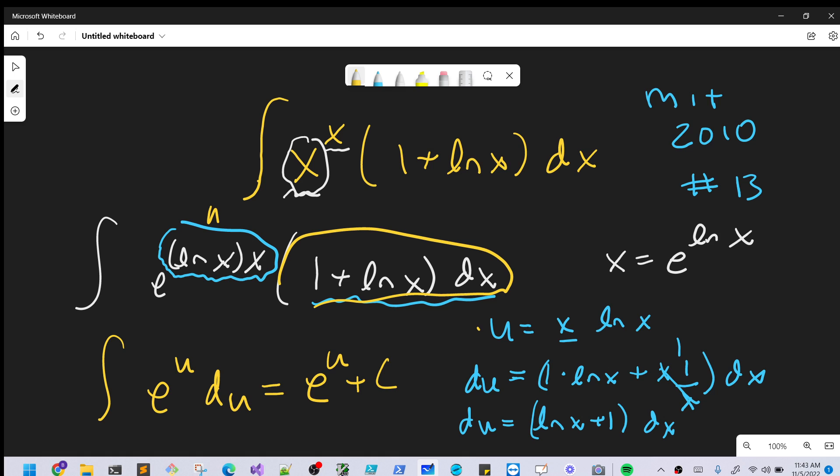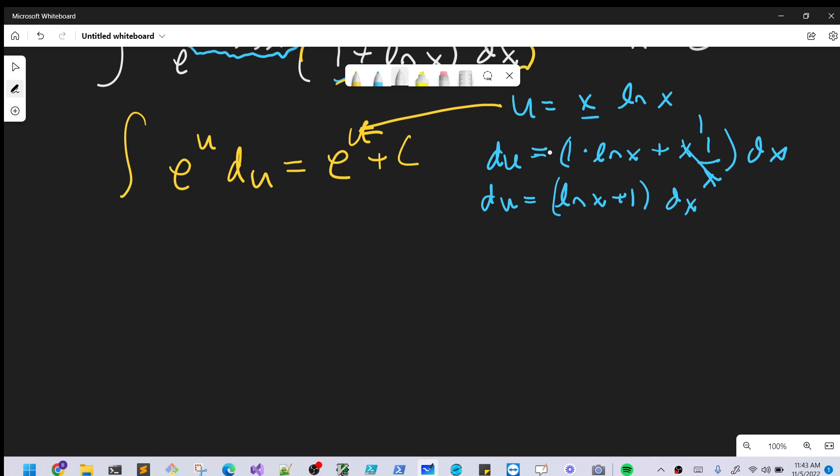Then all we need to do is back substitute, and when we do that we're going to have e to the x ln x plus C. But then, let's, we're correct here, but let's actually try to simplify this and get it back in the form where we had it in the beginning. We started with this x to the x expression and we kind of like it to look that way if we can.